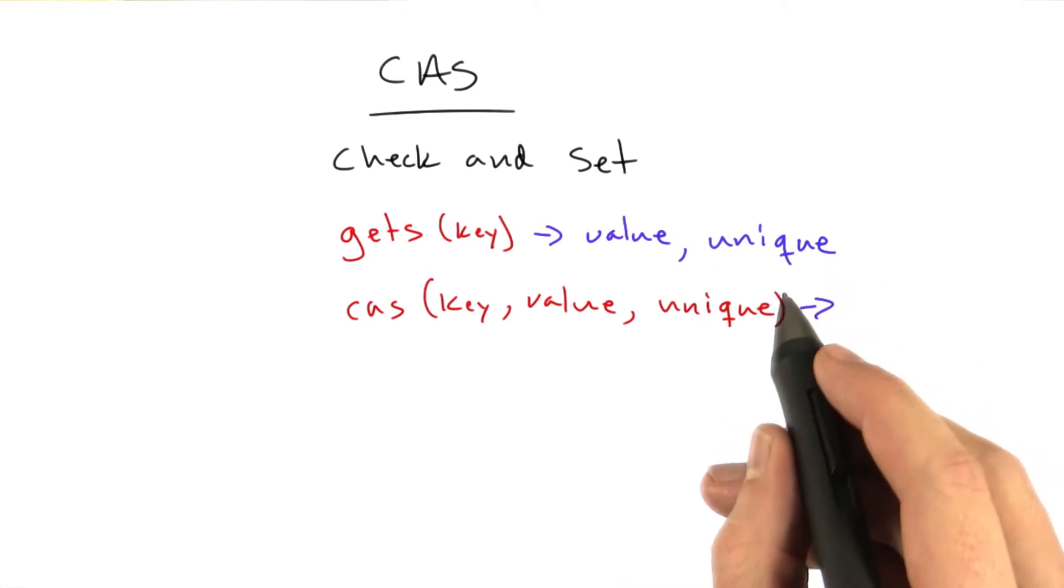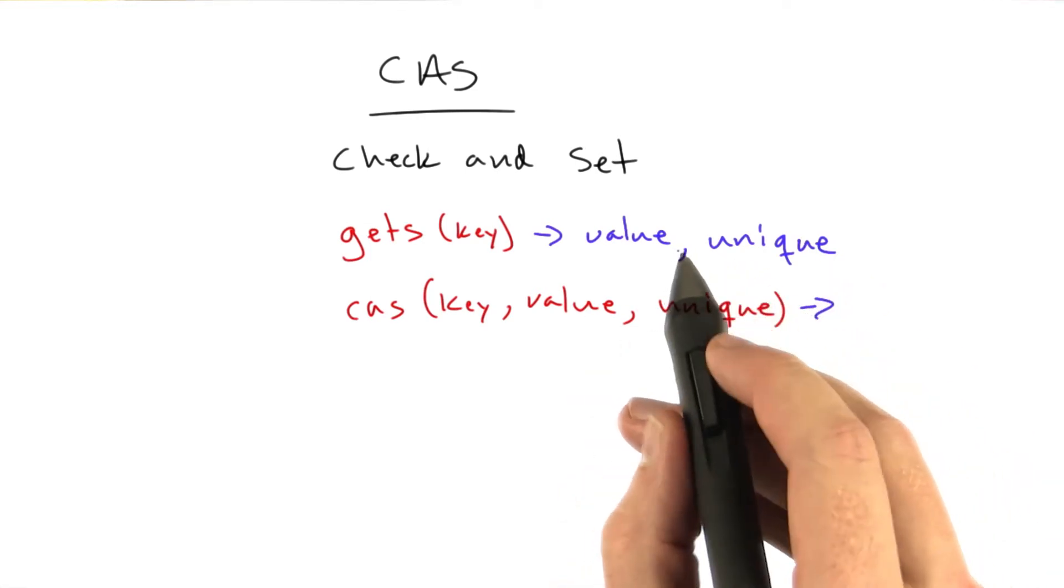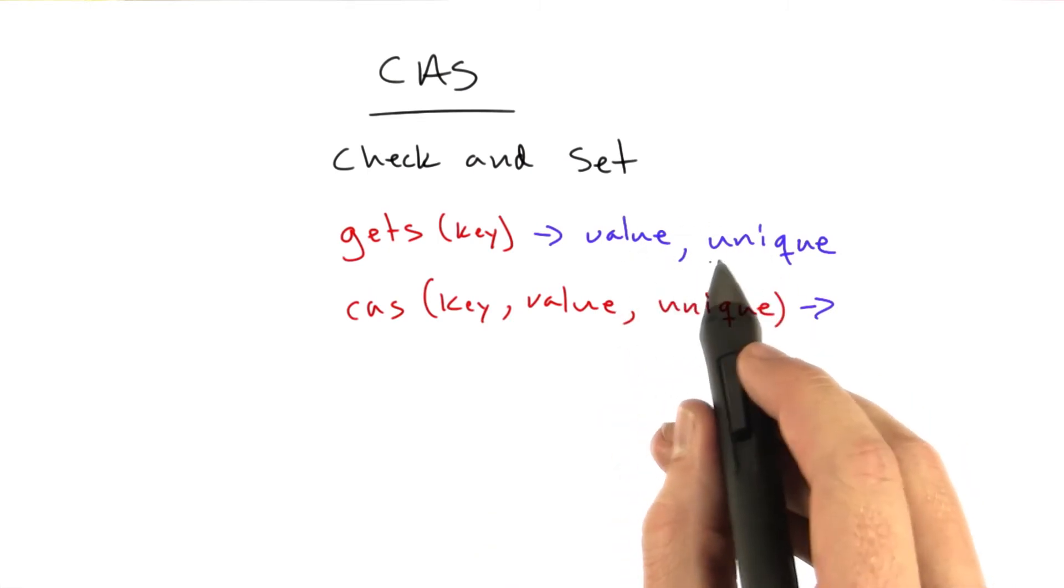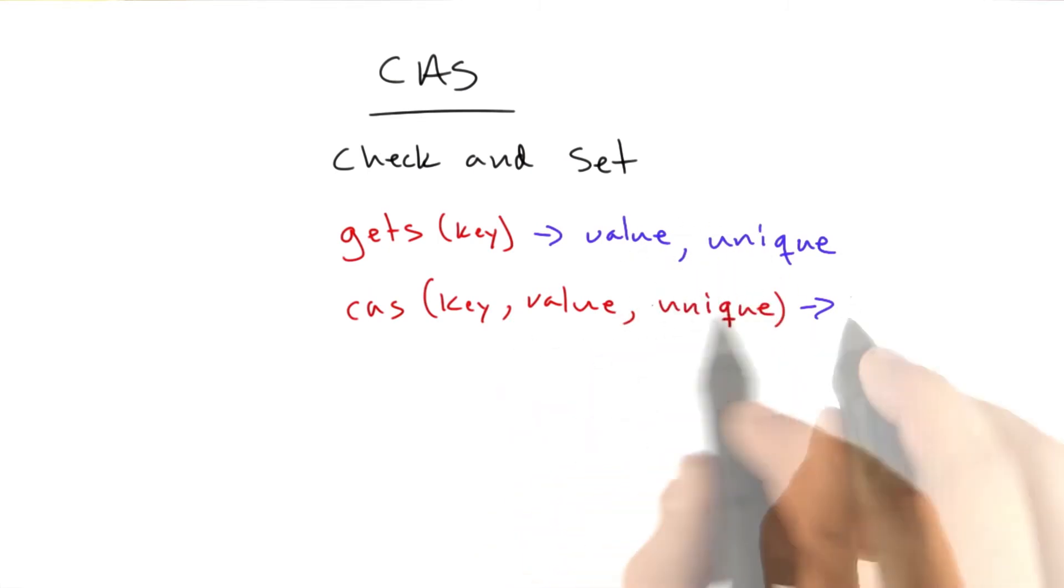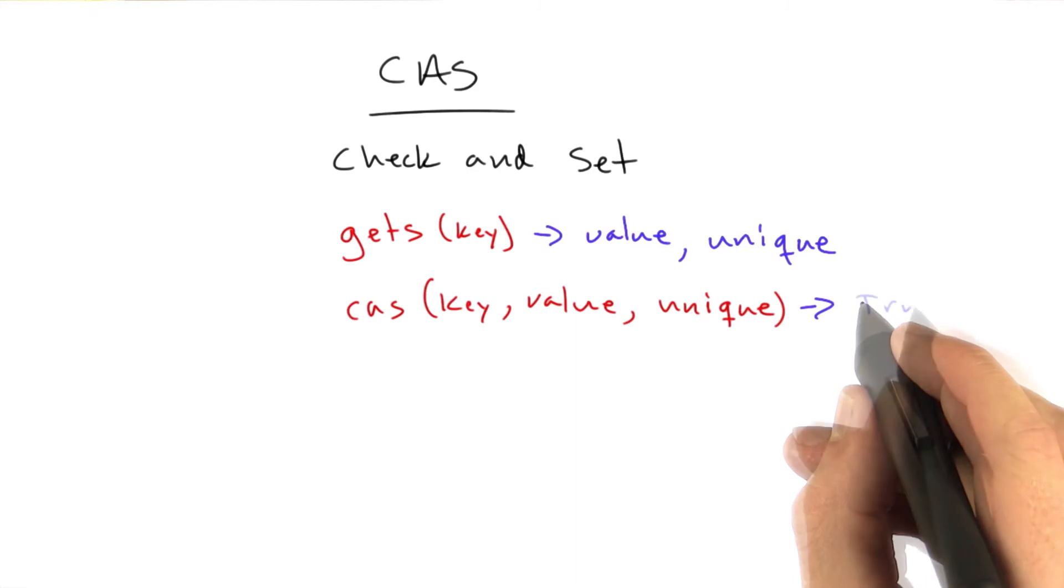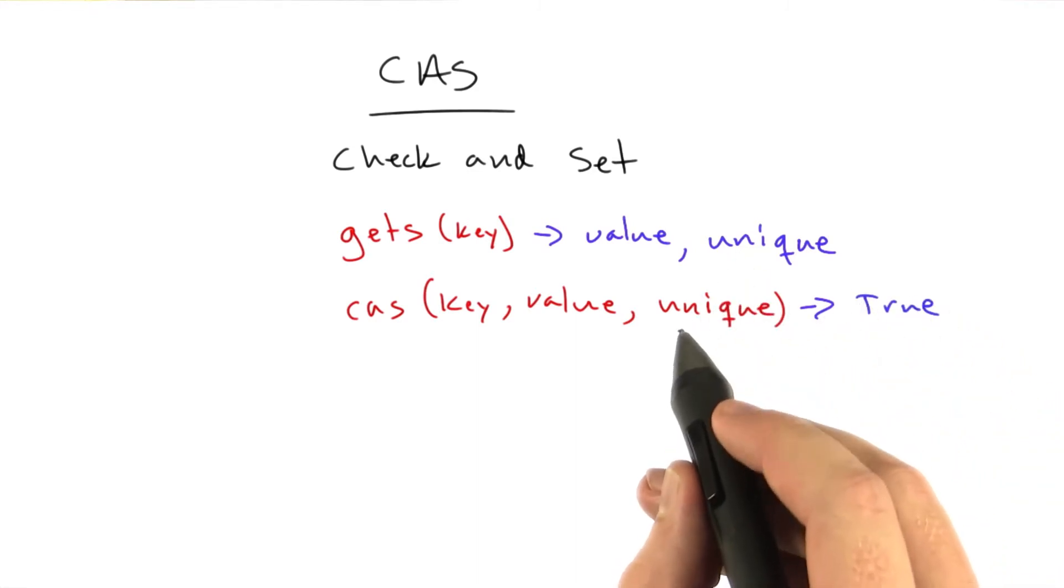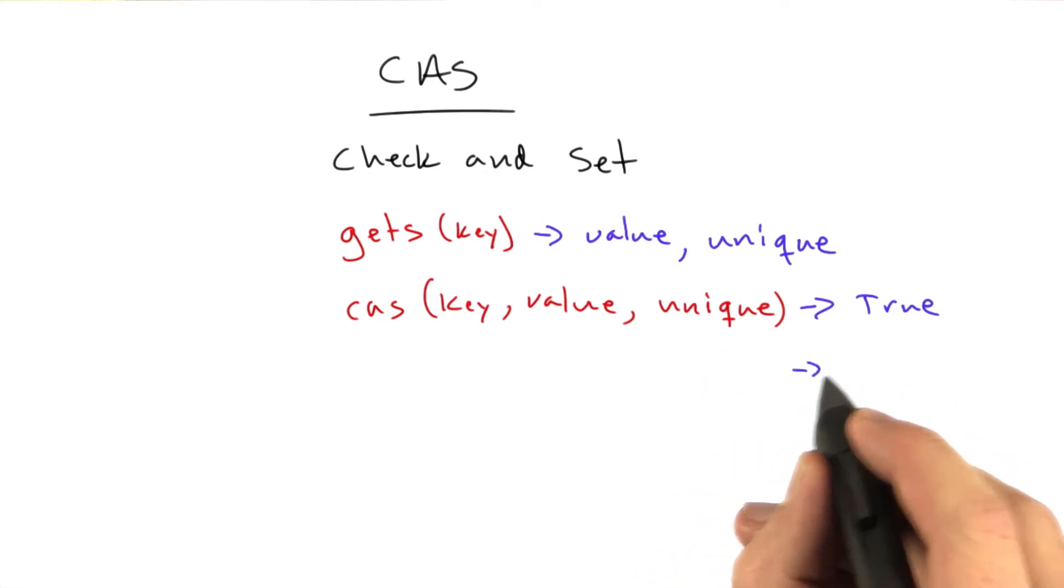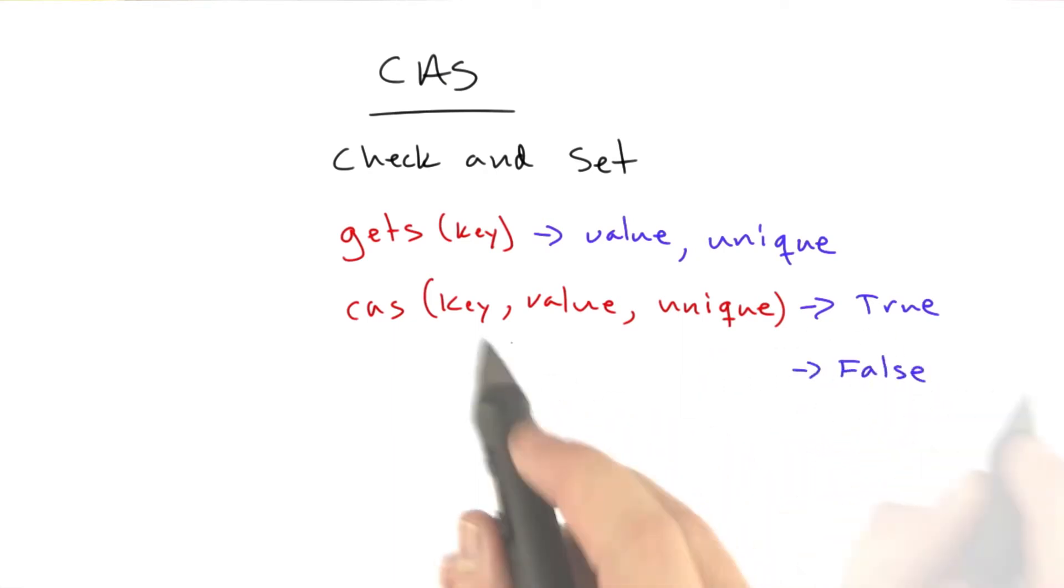And basically the way this function works is for the key that you're setting, if the unique matches the unique that came out of Memcached, overwrite it with the value and return true. But if you don't pass in a unique or the key isn't in the cache or the unique has changed, don't set it and return false. So this gives you these two commands that prevent two people from overwriting the same key in the cache.